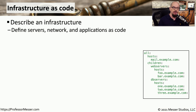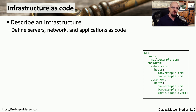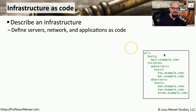In previous videos, we've talked about deploying new application instances and having those new deployments occur automatically behind the scenes without any type of human intervention. But how are we able to deploy very complex and multi-serviced applications without having anyone physically installing those apps? Well, we do it by implementing infrastructure as code. We're able to describe the application instance in a series of code that we can then deploy any time we'd like.